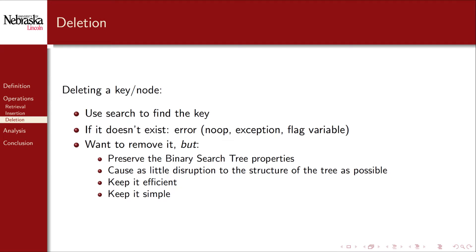Deleting or removing a node is a little more involved. We first need to find the node to delete — if it's not in the tree, we handle the error case as before. Once we've found the node, we want to remove it while preserving the binary search tree property and causing as little disruption as possible to the structure. Inducing large structural changes can be error-prone and more importantly inefficient, which necessarily means keeping it simple.